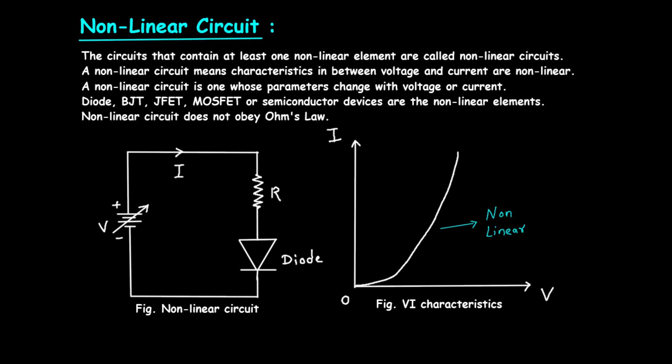Diodes allow current to flow in only one direction. They have a non-linear voltage-current relationship, meaning the amount of current that flows through a diode depends on the applied voltage in a non-linear way.